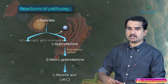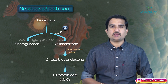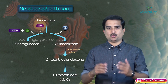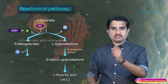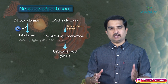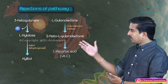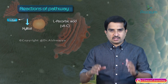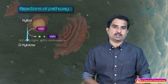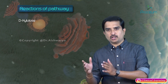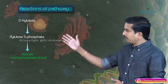In path 2, L-glucuronate is oxidized to 3-keto-gulonate, producing the second molecule of NADH. The 3-keto-gulonate is decarboxylated to the pentose L-xylulose, which is reduced to xylitol by the enzyme xylitol dehydrogenase, liberating the second molecule of NADPH. Xylitol is then oxidized to D-xylulose with liberation of the third molecule of NADH. Finally, D-xylulose is phosphorylated to xylulose 5-phosphate, which enters the hexose monophosphate shunt for further metabolism.